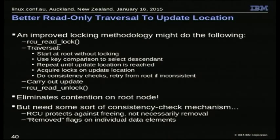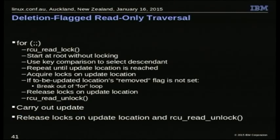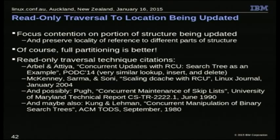You can put remove flags on data elements. When you remove an element, you hold its lock, set a deleted flag inside it, then release the lock. When someone else finds the same element because they arrived before you deleted it, they see the deleted flag and pretend they didn't find it and start over. The idea is to focus contention only on the part of the data structure being updated. The rest you traverse in an RCU read-side critical section, letting RCU keep you from being sent off into the free list.